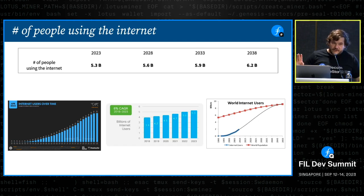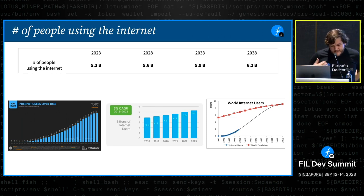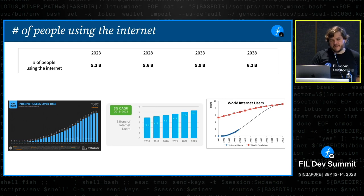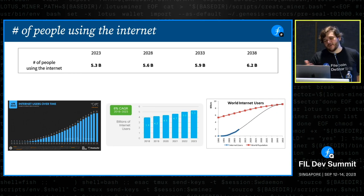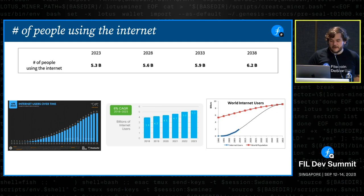My favorite approach is Google Images — you type in the question you want and add 'diagram' at the end and get amazing results. You get all these graphs from reports showing rough amounts of internet users. You can roughly interpolate between these graphs. Looking at about ten different graphs, it's roughly around 5.3 billion people on the internet today, growing at around 300 to 400 million a year. So we can safely estimate we're going to hit about 5.6, 5.9, 6.2 billion over the next 15 years.